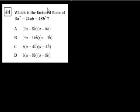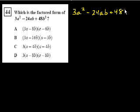Alright, we're on problem 44. They said, which is the factored form of 3a² - 24ab + 48b²? If this confuses you with a's and b's instead of an x there, I like to think of this as an a² term, the same way I would think of it as x² minus some number times x plus some other number. The first thing I like to do is try to get rid of the coefficient on the a² term.